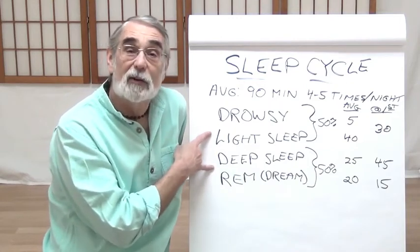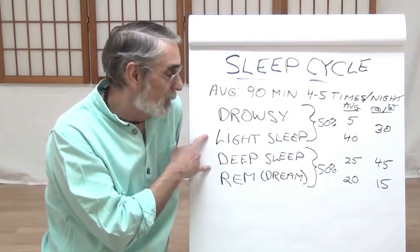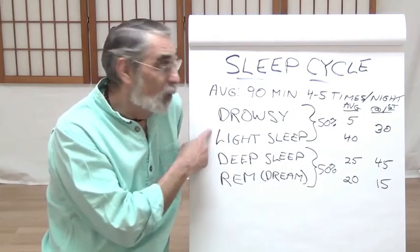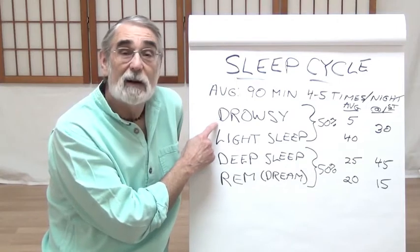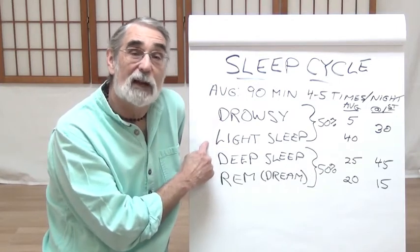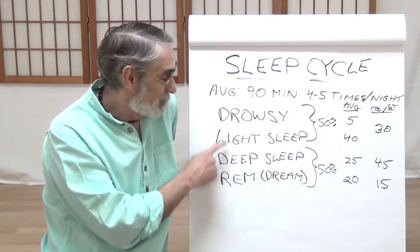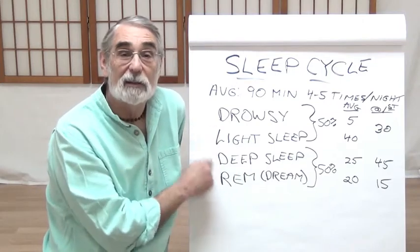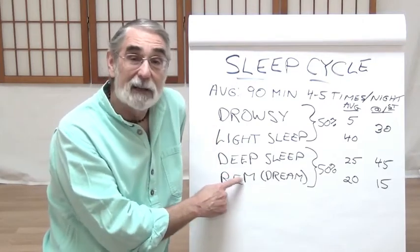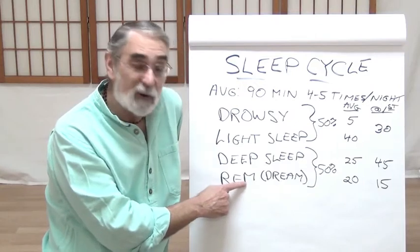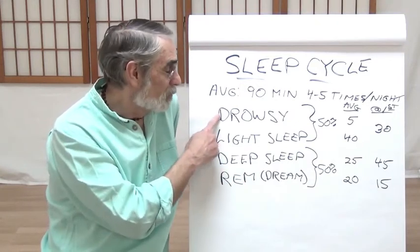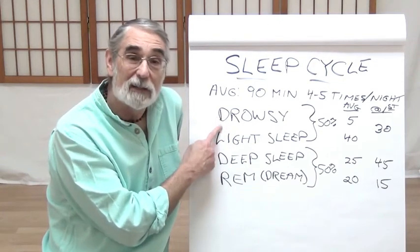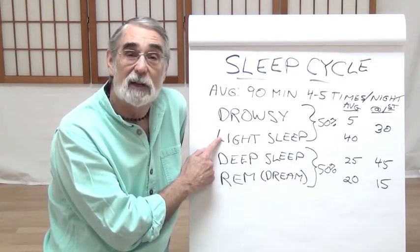Rolling over, this becomes an issue, and then it becomes an issue of getting back to sleep because the natural cycle has taken place. Ideally, we move from a very calm and peaceful REM state back through drowsiness for just a few minutes and right back into the light sleep cycle.